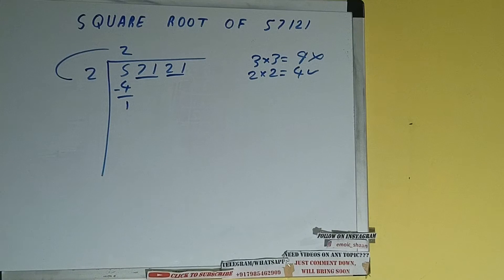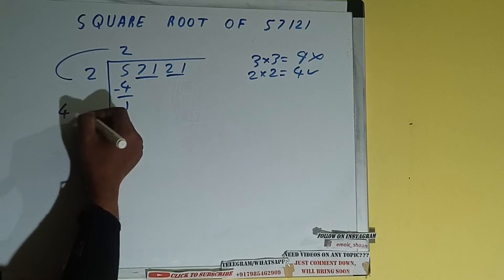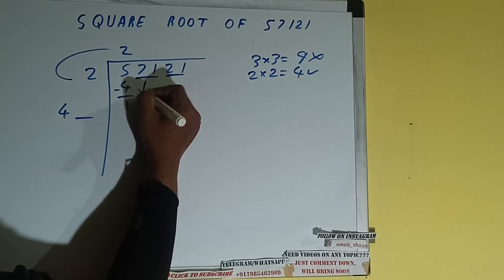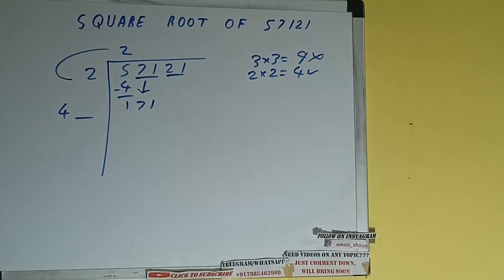We did two into two so add both. So two plus two will be four, write it here and keep a digit extra, and this number we need to make it big. So bring the next pair down and it will be 171.